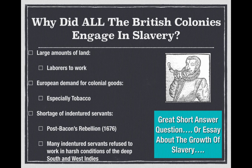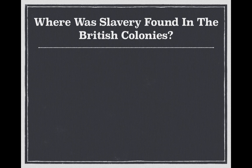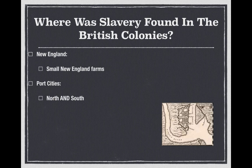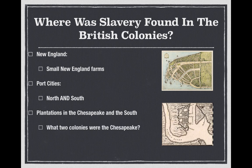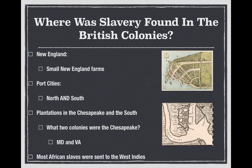So a lot of plantation owners switched to African slavery, again post Bacon's Rebellion in 1676. Now, where was slavery found in the British colonies? Again, all 13, but specifically: in New England they were found on small farms and port cities; in the Middle Colonies, port cities like New York City; in the south, port cities like Charleston and plantations in the Chesapeake. The two Chesapeake colonies are Maryland and Virginia, and most African slaves were sent to the West Indies.